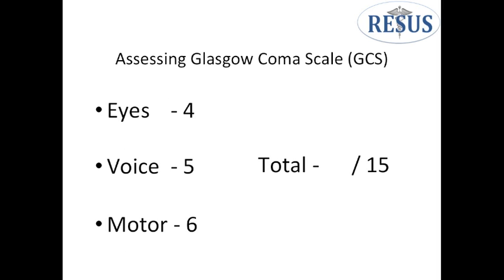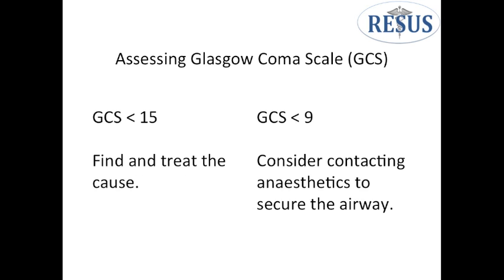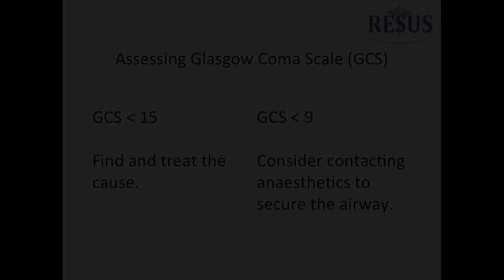GCS is scored at a potential of fifteen. The minimum score in each category is one. Therefore, the overall minimal score for someone's GCS is three out of fifteen. Any reduction in the patient's GCS is abnormal and the source should be sought. If the GCS is eight or less, then you should contact your on-call anaesthetist for assistance in securing the patient's airway.